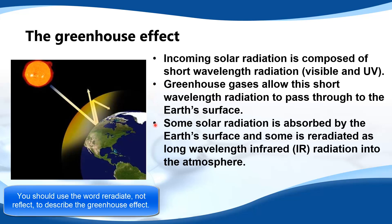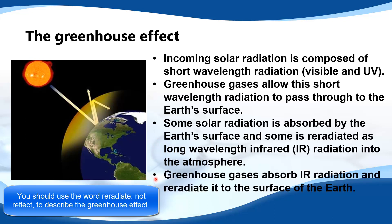Some solar radiation is absorbed by the earth's surface, which warms the surface of the earth, and some is re-radiated as long wavelength infrared radiation into the atmosphere. Greenhouse gases absorb infrared radiation and re-radiate it to the surface of the earth.